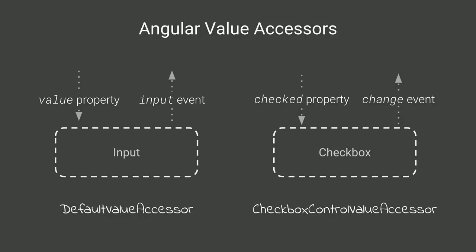Angular forms handle setting attributes and properties and listening for events. With a standard input tag, Angular sets the value property and listens for input events — we call this the default value accessor. With a checkbox, which has a different API, Angular sets the checked property and listens for change events — that's the checkbox control value accessor. While these work perfectly for standard HTML elements, we can do the same with custom value accessors for web components.